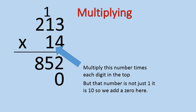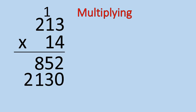All right, now I'm going to multiply 1 times 3, 1 times 1, 1 times 2, and we've completed that step. We've multiplied 10 times 213 and gotten 2130.